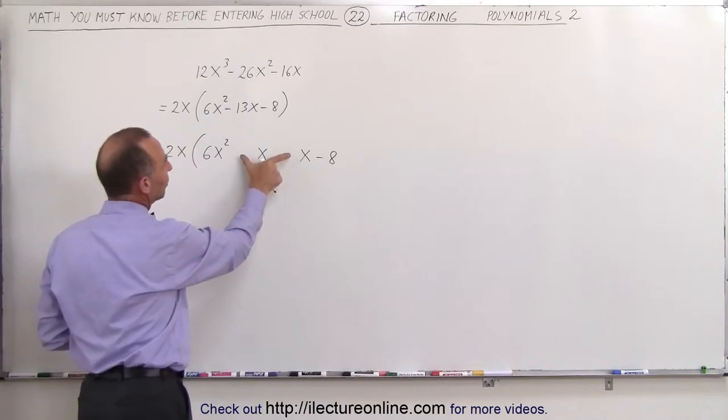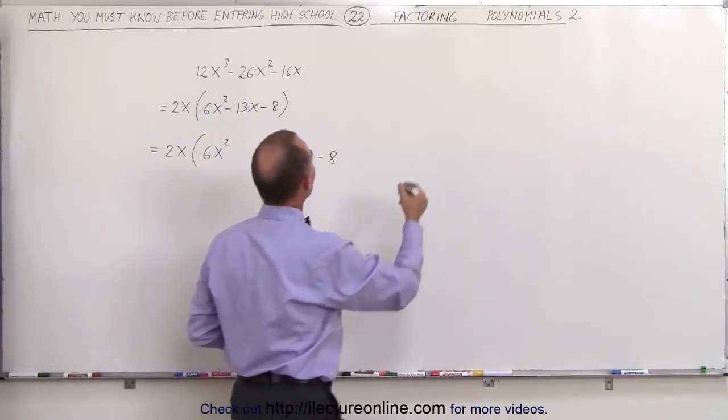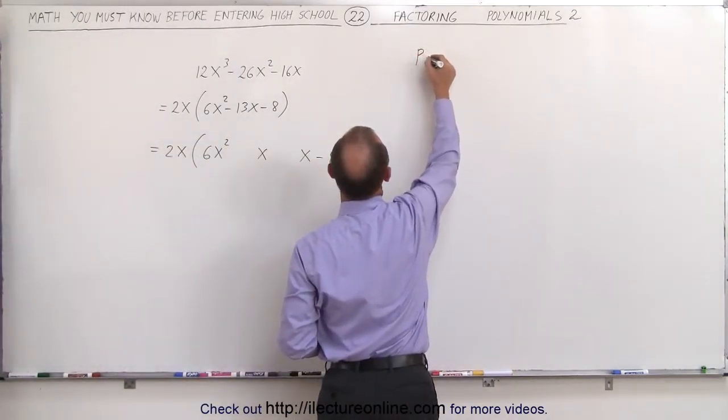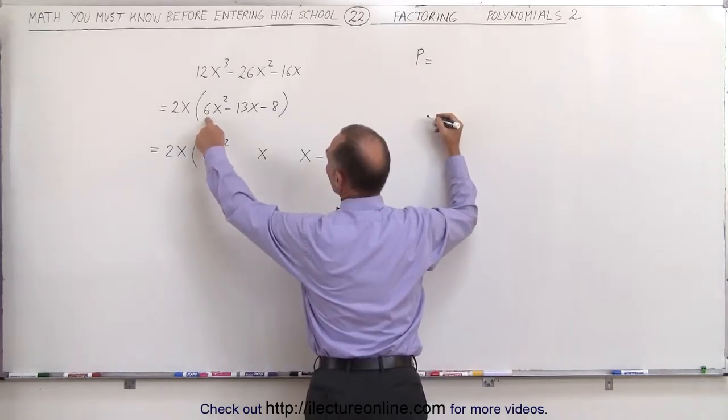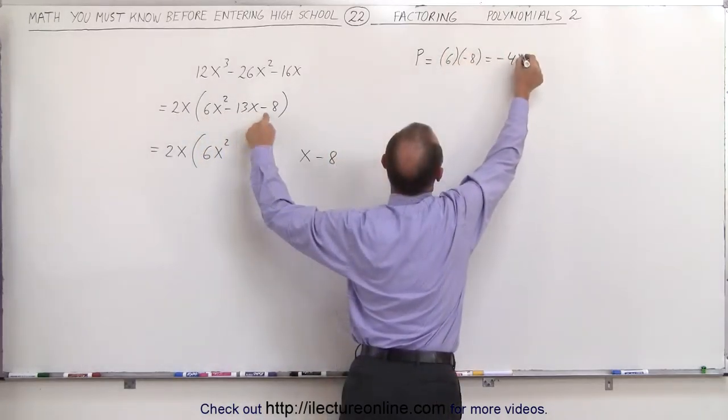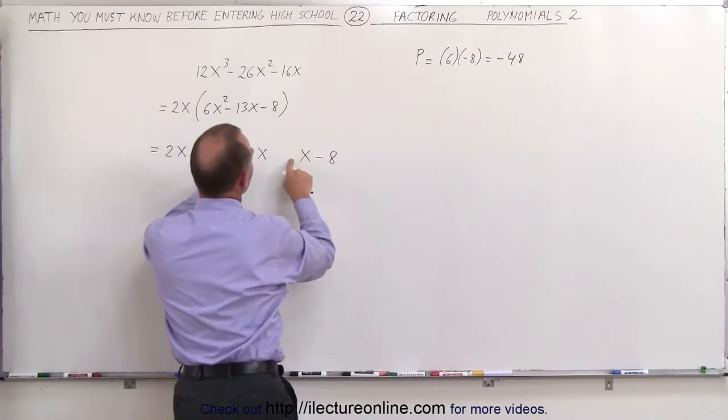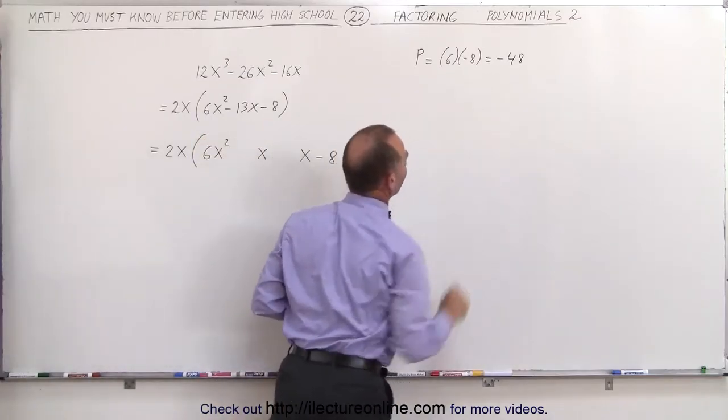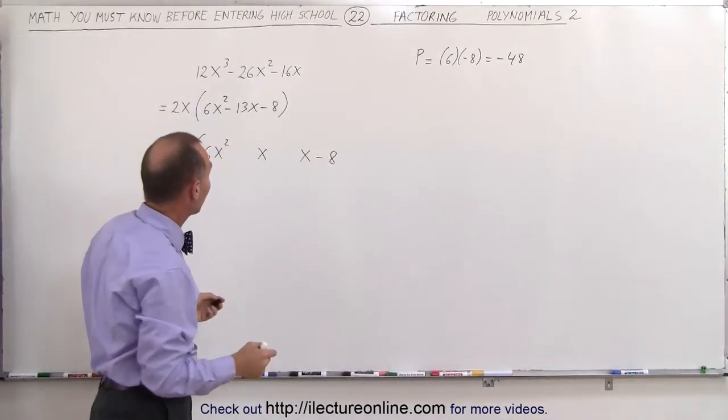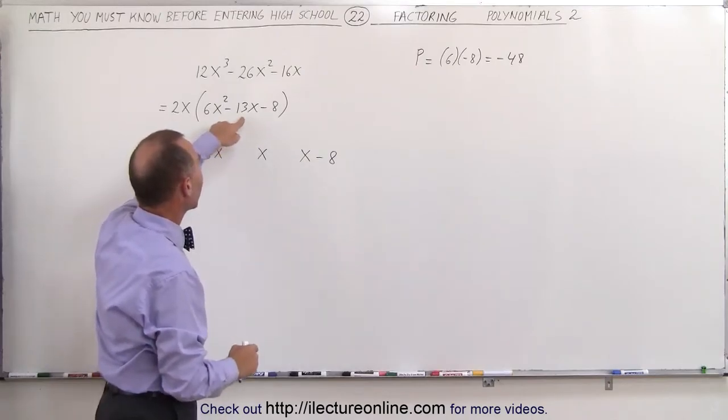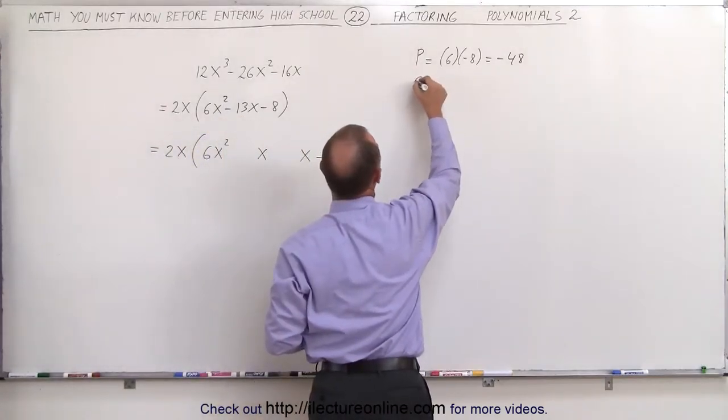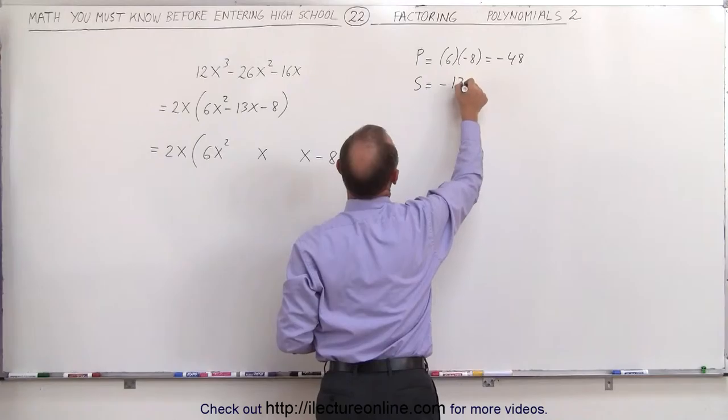What are the coefficients that need to go here? We can find those by saying that the product of those two numbers must equal 6 times negative 8. In other words, these two numbers multiplied together should give us minus 48. And when we add them together, we should get negative 13. So the sum must equal negative 13.